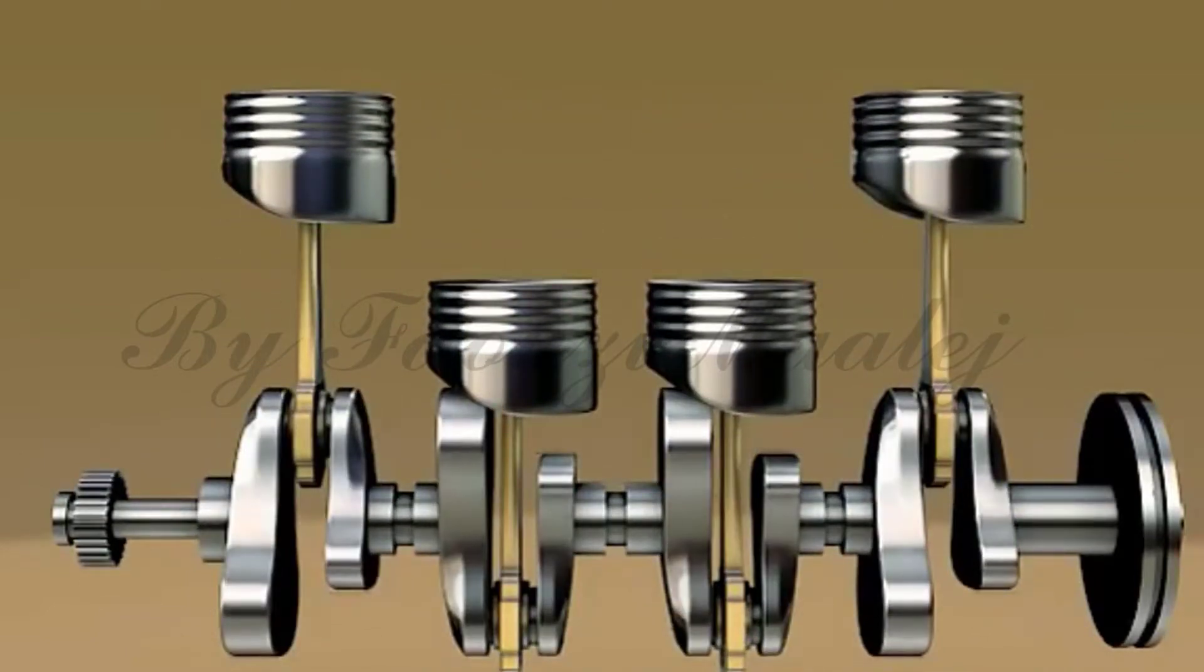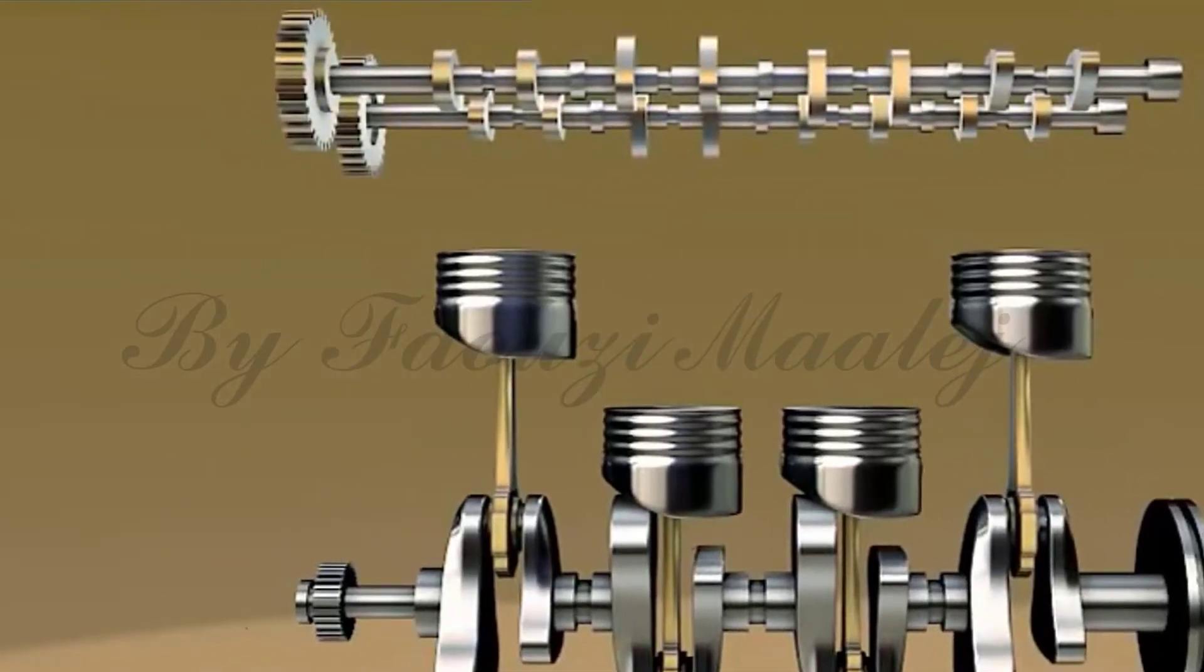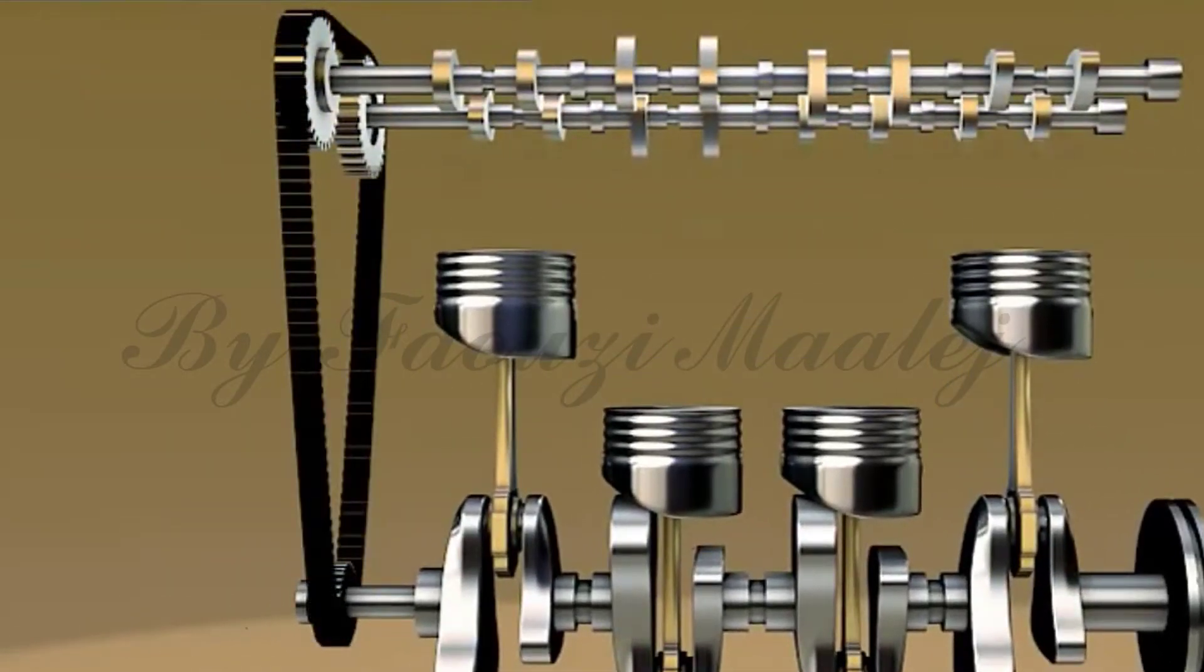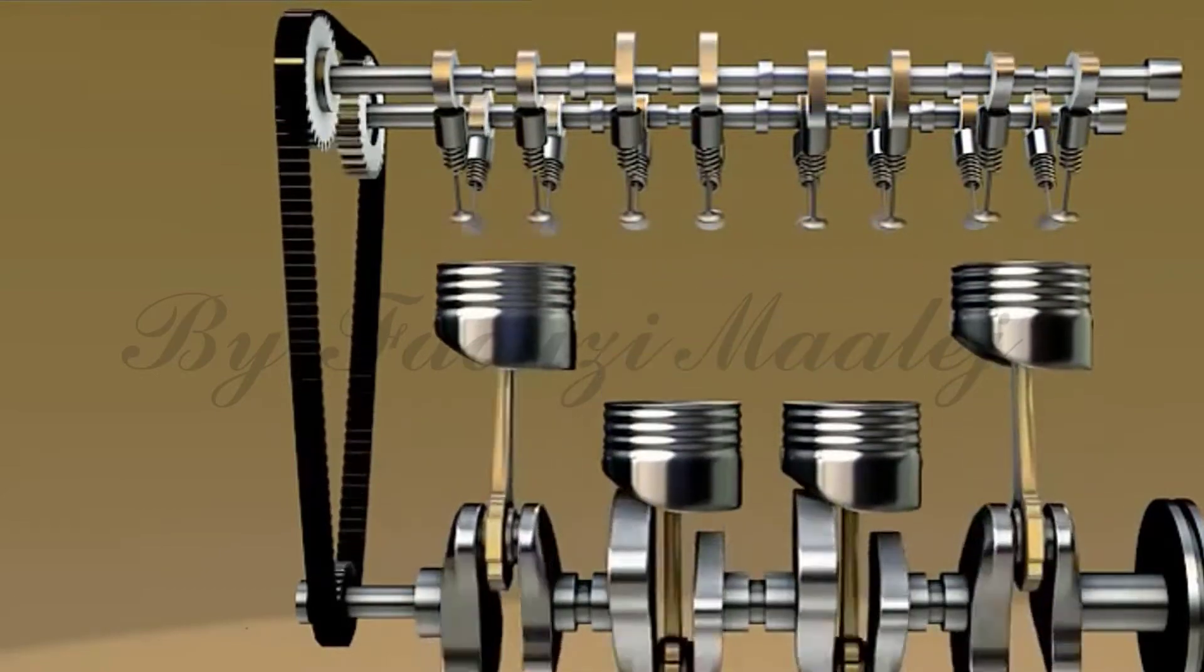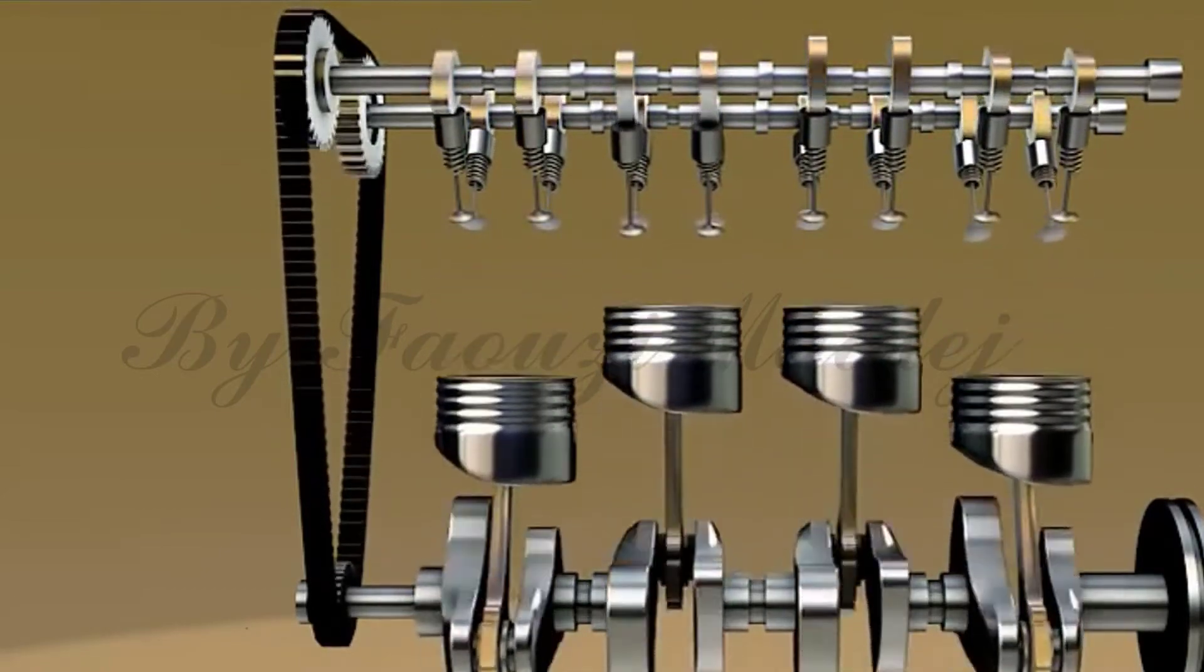At the top of the crankshaft, there is a camshaft which is connected to the crankshaft by a timing belt. While the crankshaft is making the pistons move up and down, the camshaft is turning making the valves to open and close.